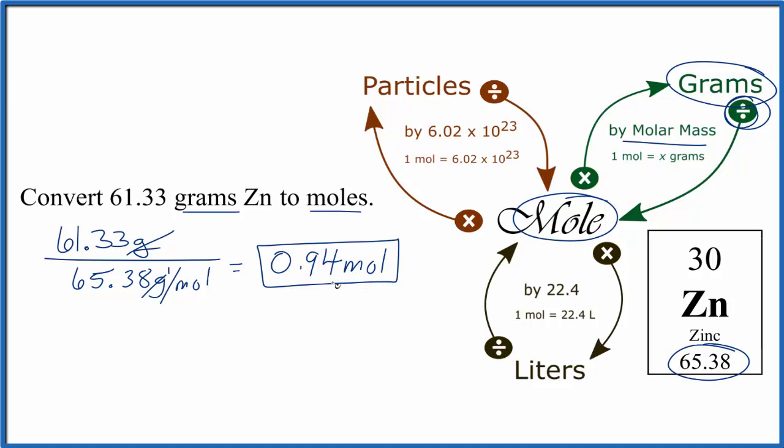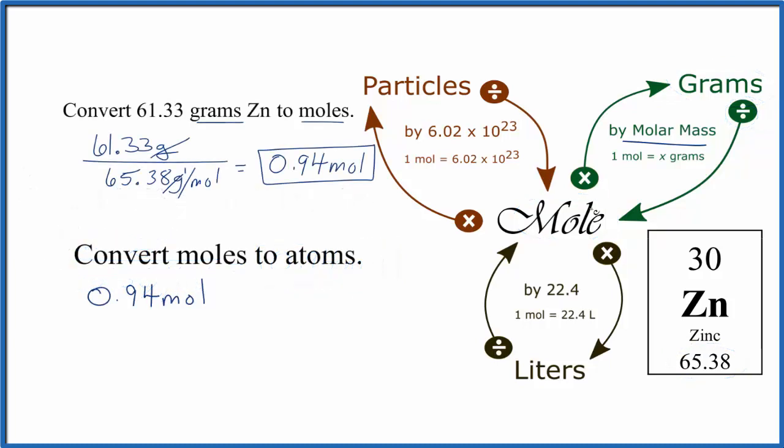So let's convert these moles of zinc to atoms of zinc. When we're going from moles to particles, particles are atoms, molecules, ions, we're going to multiply by Avogadro's number. One mole equals 6.02 times 10 to the 23rd particles, or in this case, atoms. That'll look like this.